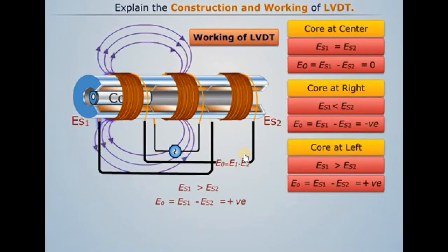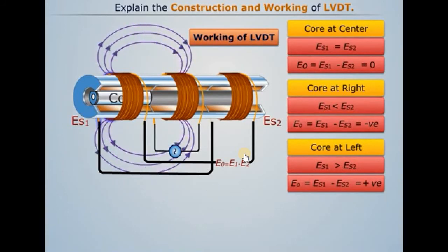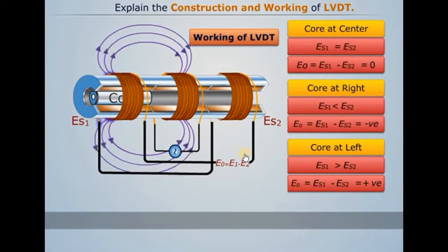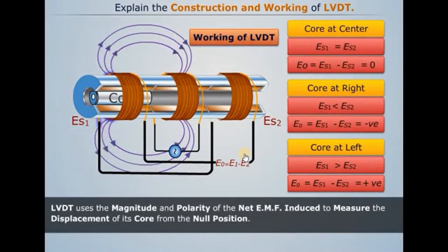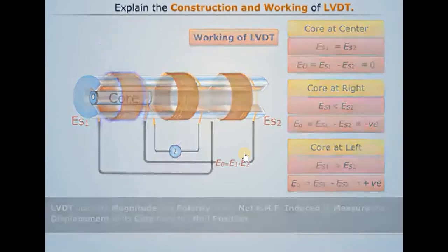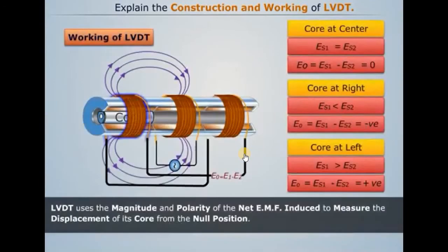At the center position, displacement is zero. When the core moves to the right, the output is negative. When the core moves to the left, the output is positive. The magnitude and polarity of the induced EMF measure the displacement of the core from the null position.